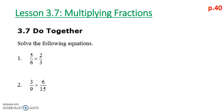For the do-together, we look to cross-reduce and then multiply numerator times numerator, denominator times denominator. We have 5 and 3 — those cannot be cancelled. But 6 and 2 can: divide by 2 gives 1 and 3. Now multiply: 5 times 1 is 5 for the numerator, and 3 times 3 is 9 for the denominator. Our answer in lowest terms is 5 ninths.